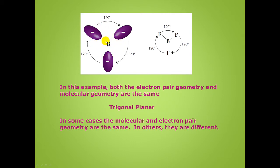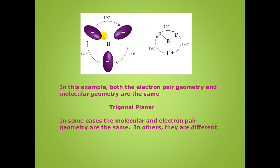The electron pair geometry for boron trifluoride is trigonal planar, and the molecular geometry is also trigonal planar. In this case, the molecular and electron pair geometries are the same, but we're going to see cases where they can be different. We have a central atom bonded to three atoms and there are no lone pairs about that central atom. When you don't have lone pairs around the central atom, the electron pair geometry is usually the same as the molecular geometry.